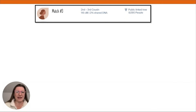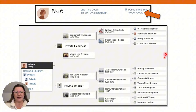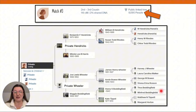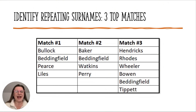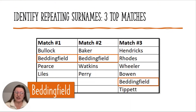Match number three has a huge tree with over 9,000 people. Looking at their eight great-grandparents, we have Hendricks, Rhodes, Walker, Brown, Thomas Beddingfield, Winifred Beddingfield — this person uses the spouse's name as the husband's name — Tippett, and Horton. When I look at Winifred Beddingfield's parents, this is Pierce. Here is the same couple again. Now looking at the surnames across all three top matches, I was looking for Hunter and Pierce — I saw Pierce in one tree, I didn't see any Hunters, but I saw all three trees going back to Thomas Beddingfield and Winnie Pierce. That is my target surname.